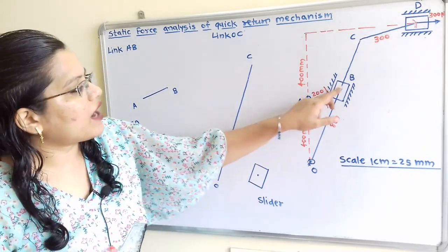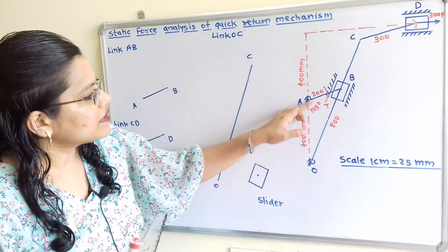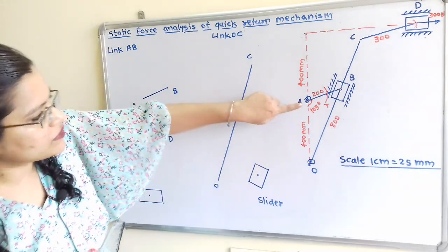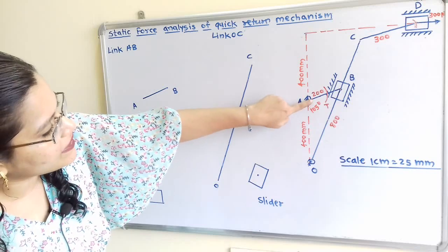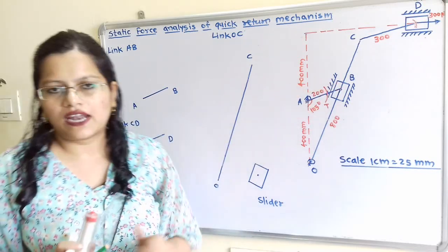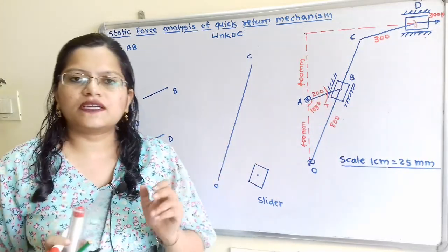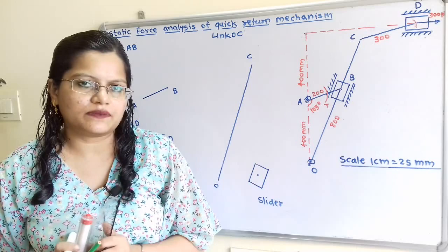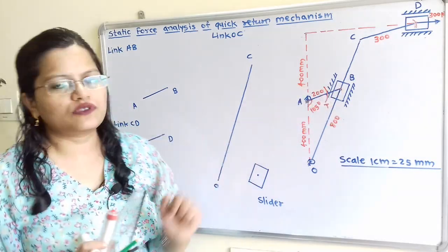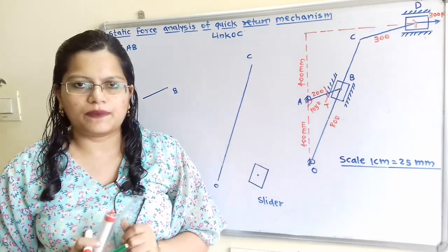Now from point A we draw link AB. An angle of 105 degrees is given, so with the horizontal reference line we take 105 degrees and draw one line. The link AB length is 200 mm, so we take 8 cm distance and select point B. Link AB is now complete.